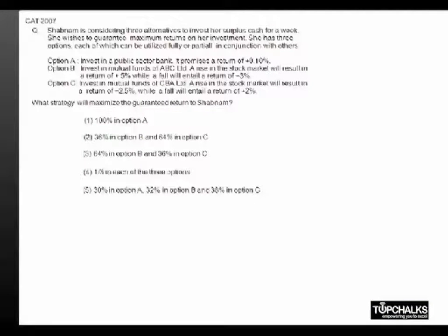In this question we need to maximize the guaranteed return from three options that we have. Option A gives us 0.1% if you invest in a public sector bank.